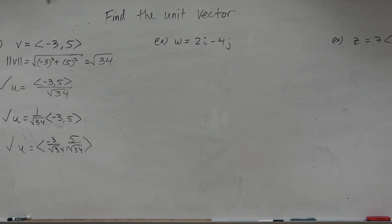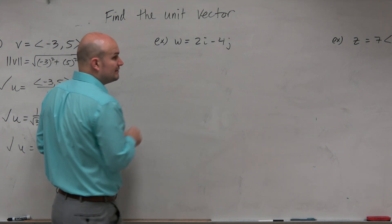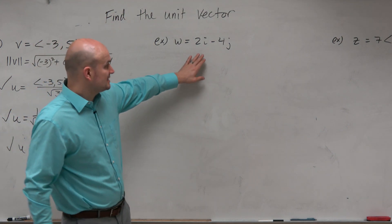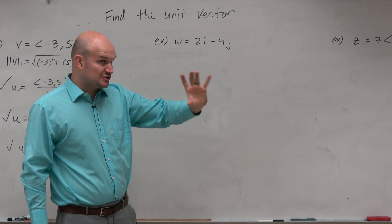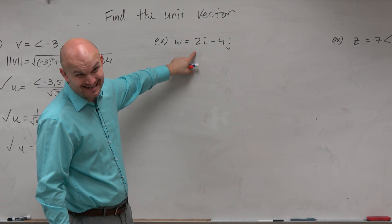Let's take a look at this example. In this example, we're going to find the unit vector. A unit vector has a magnitude of 1. So hopefully you guys already recognize that this does not have a magnitude of 1.